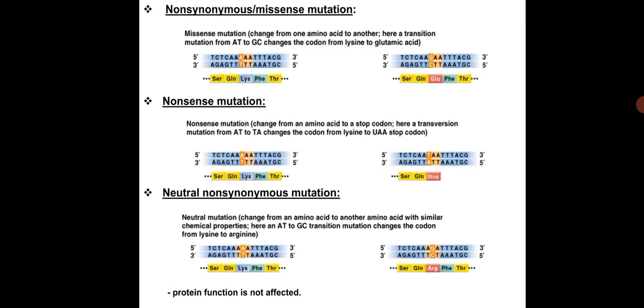Based on the reading sense of codons on mRNA, mutations can be categorized. In non-synonymous missense mutation, there is a change from one amino acid to another. For example, a transition mutation from AT to GC results in a change in the codon that changes amino acid lysine to glutamic acid.